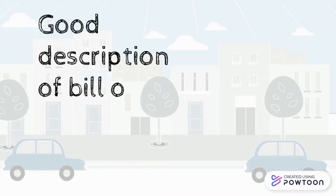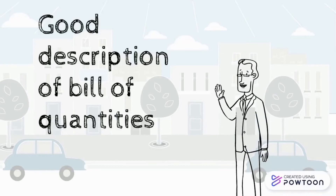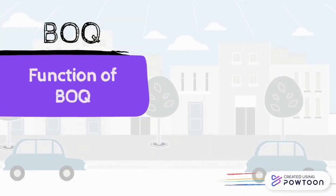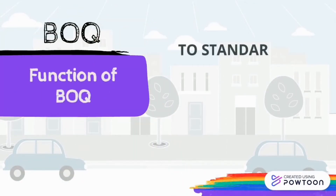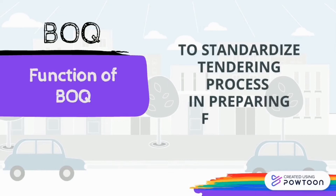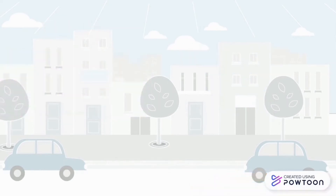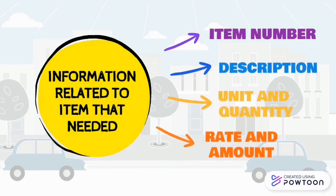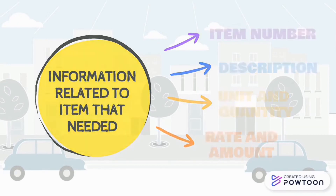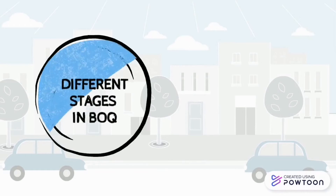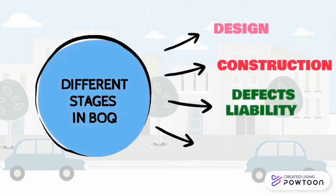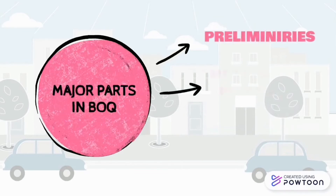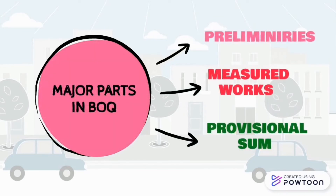A good description of billed quantities: the function of a Bill of Quantities (BOQ) is to standardize the tendering process in preparing firm cost. The information related to each item includes item number, description, unit and quantity, and rate and amount. The different stages in BOQ are design, construction, defects liability, and operation and maintenance. The major parts in BOQ are preliminaries, measured works, and provisional sum.